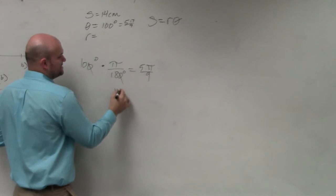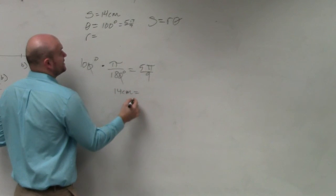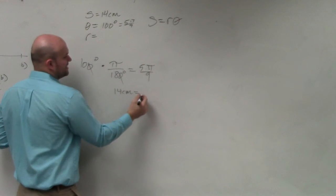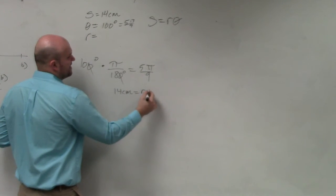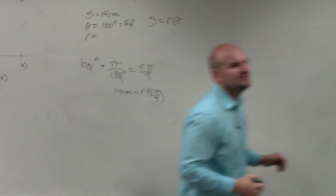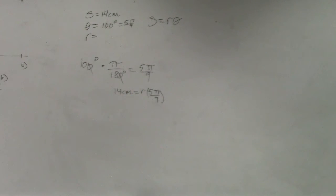So now I have 14 centimeters is equal to r times theta, so r times theta, which is 5 pi over 9. Now again, what do I need to solve for? I need to solve for r, right?